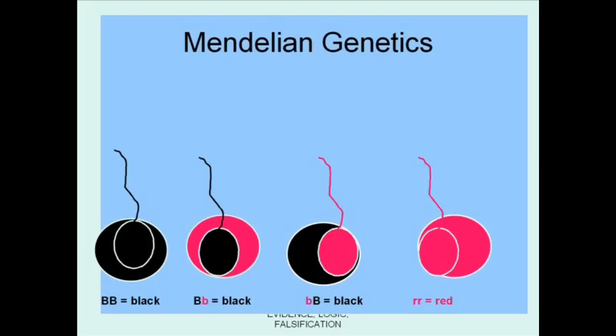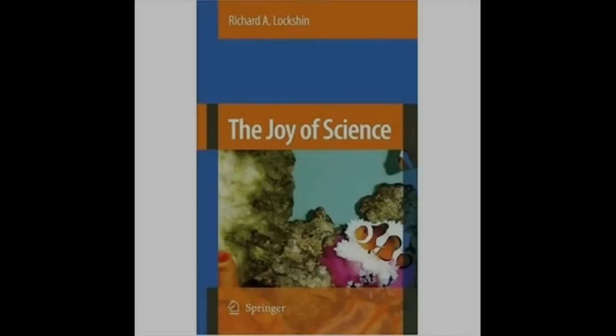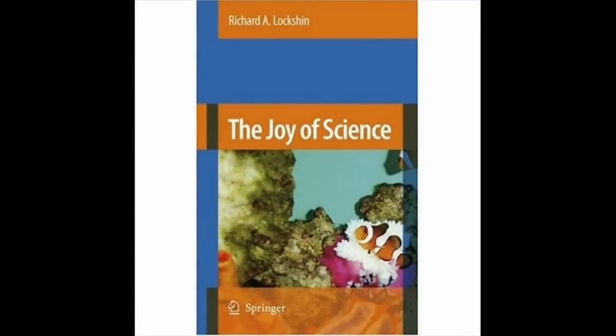Thus we get a three to one ratio. This and other topics can be found in The Joy of Science by Richard A. Lockshan, published by Springer.